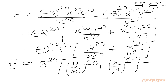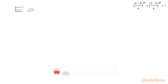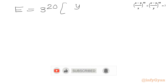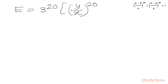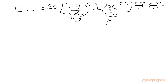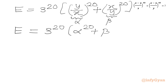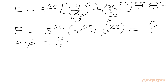This is our required expression E so far: E equals 3 power 20 times [(y over x) whole power 20 plus (x over y) whole power 20]. We now let y over x equal alpha and x over y equal beta. The expression becomes 3 power 20 times (alpha power 20 plus beta power 20). Let us calculate alpha times beta: that is y over x times x over y, which equals 1.